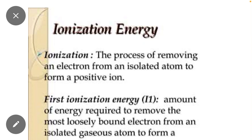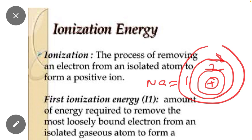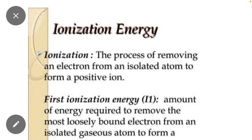Keep in mind, the energy required to remove the valence electron is called ionization energy. For example, sodium has 11 electrons: 2 electrons, 8 electrons, and 1 electron. The energy required to remove this valence electron is called ionization energy. If the energy is required to remove one electron, it is called first ionization energy.